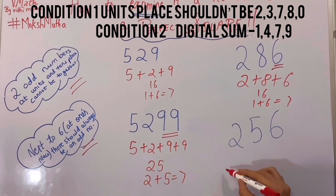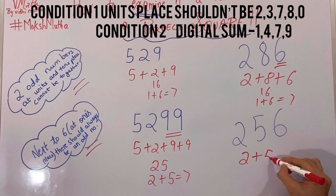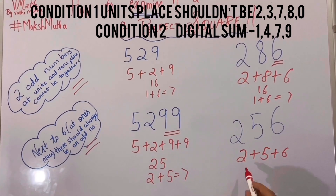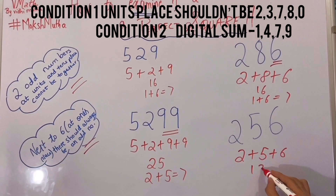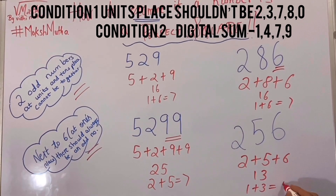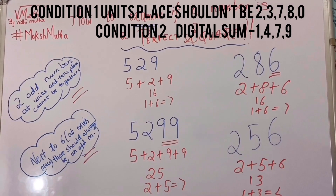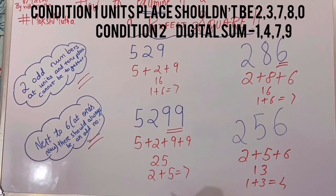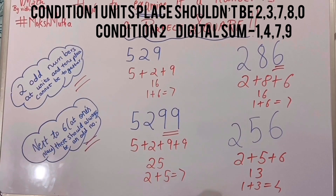For 256, we find the digital sum: 2 plus 5 plus 6. 2 plus 5 is 7, 7 plus 6 is 13, again 1 plus 3 is equal to 4. So yes, the digital sum is 4. It means it is a perfect square number, and yes it is the square of 16.